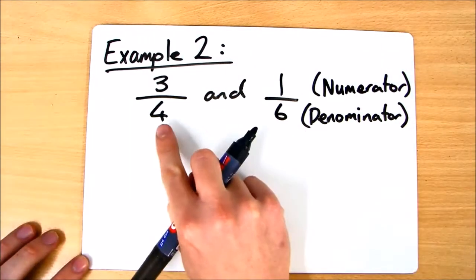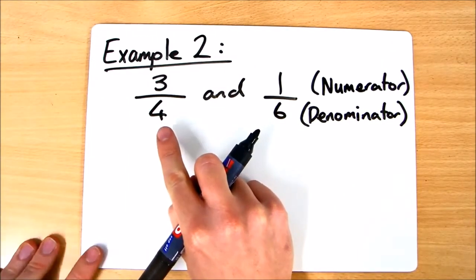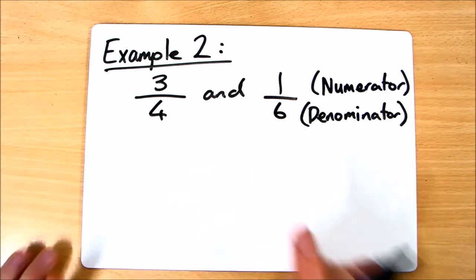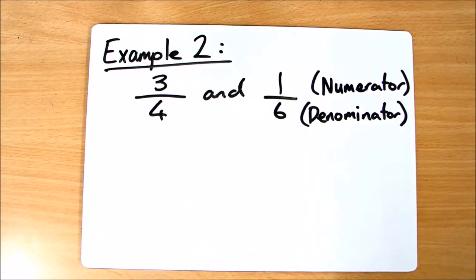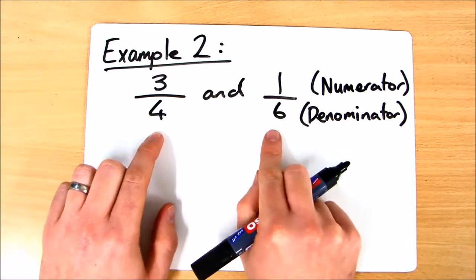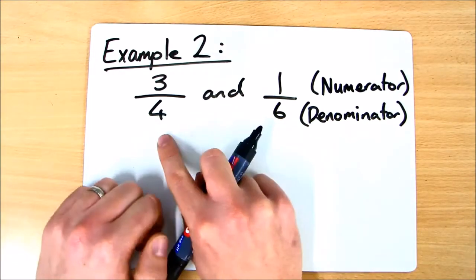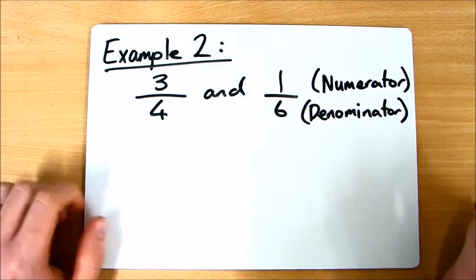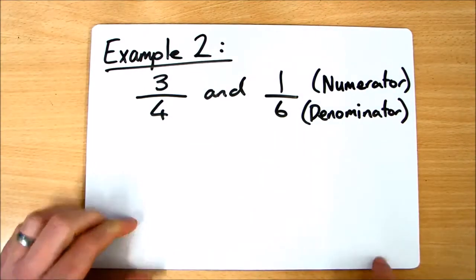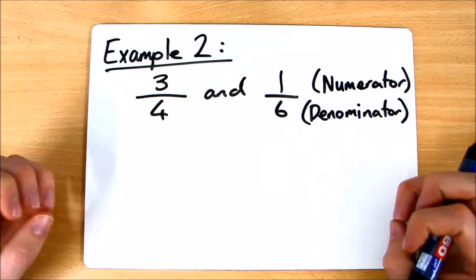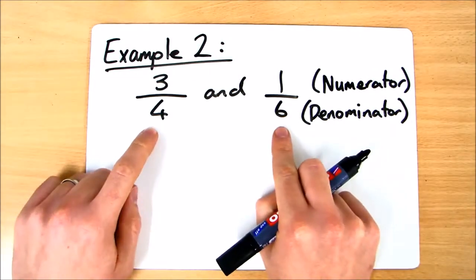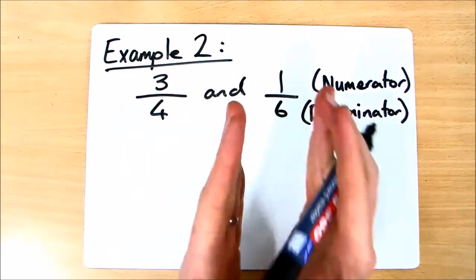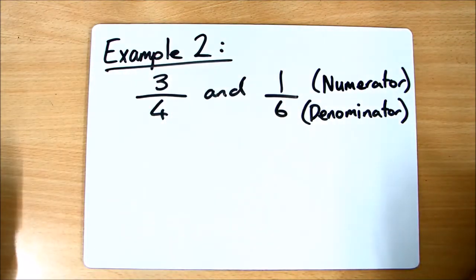Example 2: the lowest common denominator between 3 quarters and 1 sixth. So 4 cannot go into 6 and 6 cannot go into 4. There is a way we can do this: we find which number appears in each of the times tables — we need a number that is a multiple of both 4 and 6.